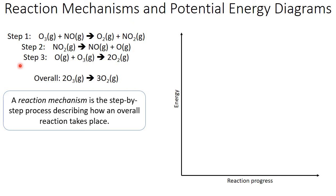A reaction mechanism is the step-by-step process describing how an overall reaction takes place. Our overall reaction just shows the ozone and the oxygen, whereas our mechanism shows all of these other species that are involved in the reaction.